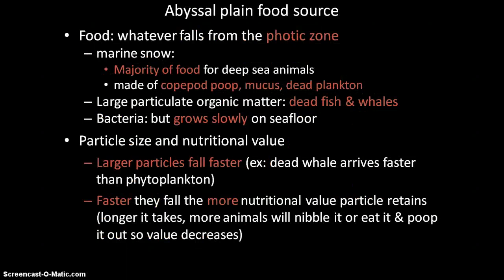The food source for the abyssal plain is whatever falls from the photic zone. The main source of food for this region is marine snow — everything from the epipelagic zone is the majority of the food source for the deep sea floor. Marine snow is made mostly of copepod poop, mucus, and dead plankton. You also have food from dead fish and whales that fall to the ground, called large particulate organic matter, and bacteria which grow very slowly on the seafloor.